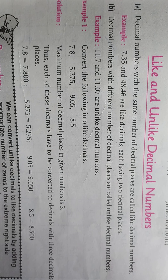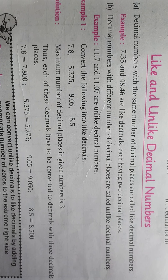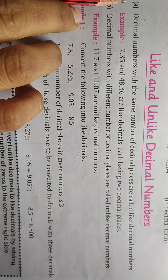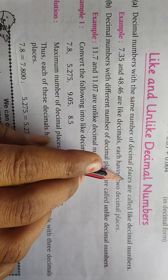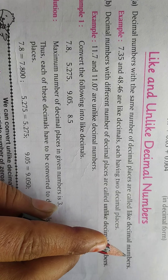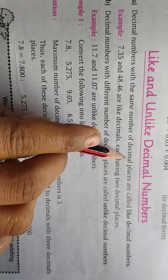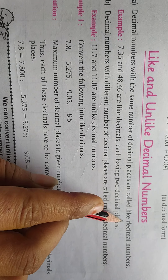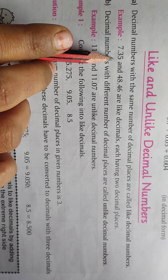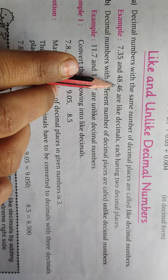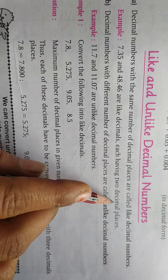Hello students. Our next topic is like and unlike decimal numbers from chapter 8. Decimal numbers with the same number of decimal places are called like decimal numbers. For example, 7.35 and 48.46 are like decimals because each has two decimal places.